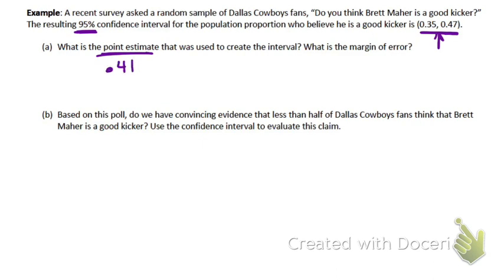So the actual sample they took — 41% of that sample, whatever size it was, said Brett Maher was a good kicker. Now, what's the margin of error? That would be the distance from 0.41 out to either of the endpoints. What is 0.41 to either side? 0.06.